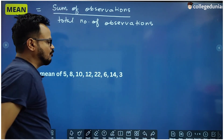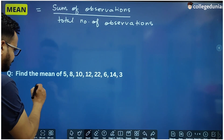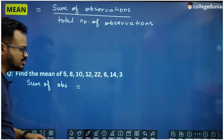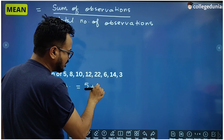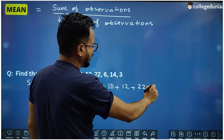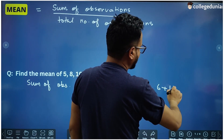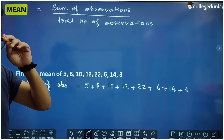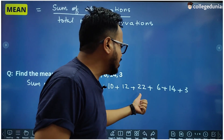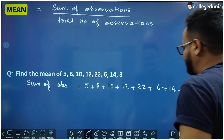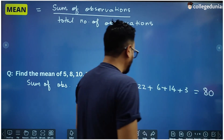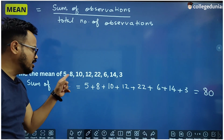For example, let's find out the mean of this data. The sum of observations is simply 5 plus 8 plus 10 plus 12 plus 22 plus 6 plus 14 plus 3. So: 5 plus 8 is 13, plus 10 is 23, plus 12 is 35, plus 22 is 57, plus 6 is 63, plus 14 is 77, plus 3 — so the sum is 80.